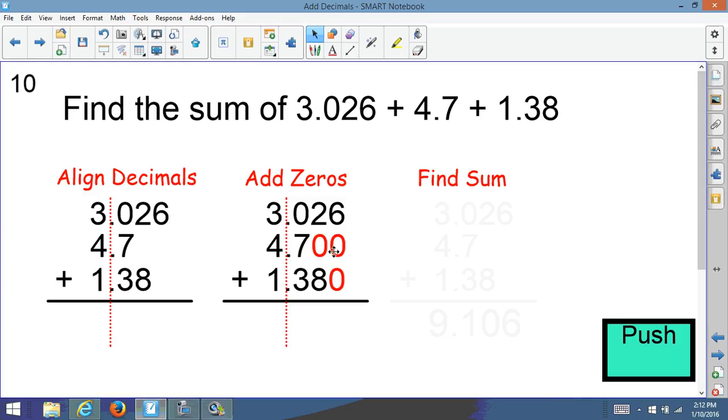So notice I added three zeros, two zeros up to 4.7, which leaves it as the same number, so it doesn't change. You may add as many zeros as you like. So you have to balance. And I added a zero to 1.38. So now I have enough spaces that are taken up. It's all even, and now I can add it up.